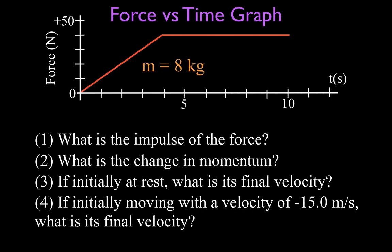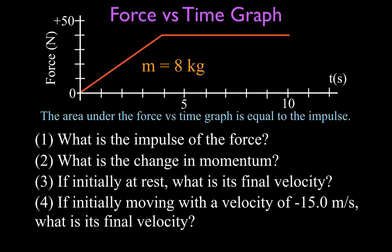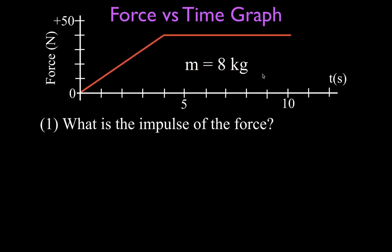The most important thing to remember is when you have a force versus time graph, the area under the force versus time graph is equal to the impulse. What we mean by the area under the graph is the area between the graph and the zero line. So this area under here is equal to the impulse, and the first thing we're going to do is figure that out — it's basically a geometry question.